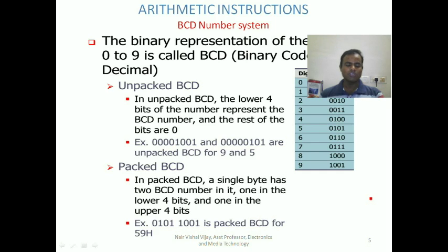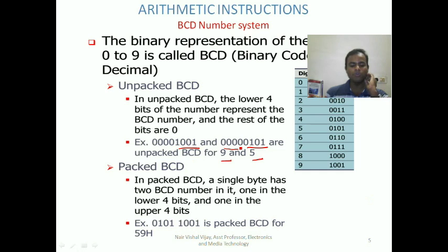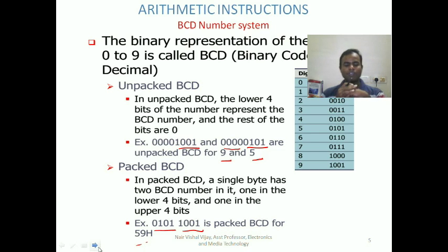There are two types of BCD numbers: unpacked BCD and packed BCD. In unpacked BCD, the lower four bits represent the BCD digit and the upper four bits are zero. For example, 0101 represents 5 and 1001 represents 9. In packed BCD, both nibbles represent a digit — for example, 59 is represented as 0101 1001. That is the difference between packed and unpacked BCD numbers.